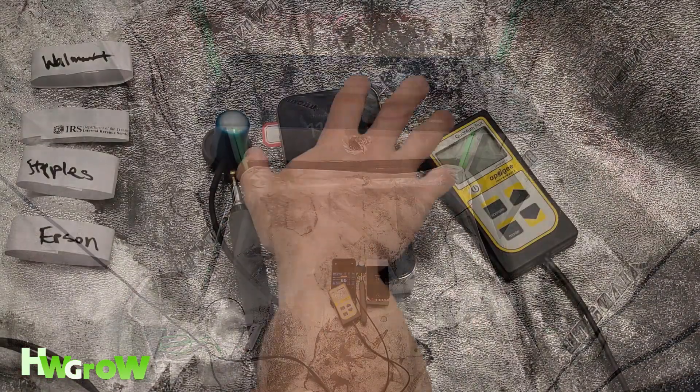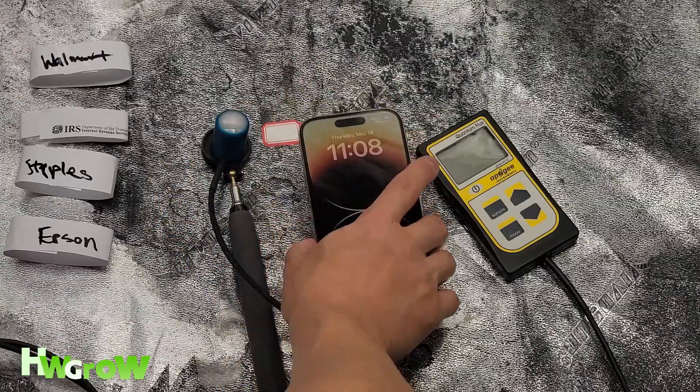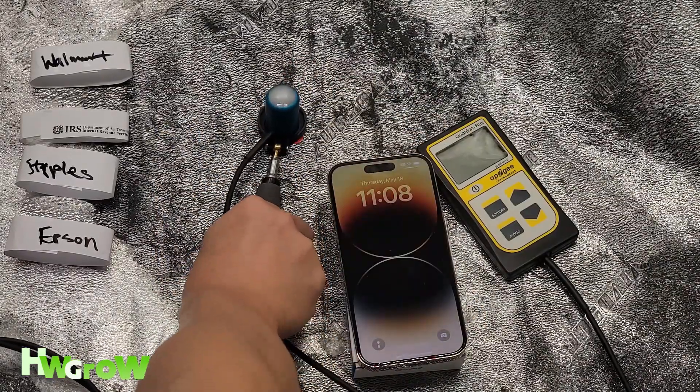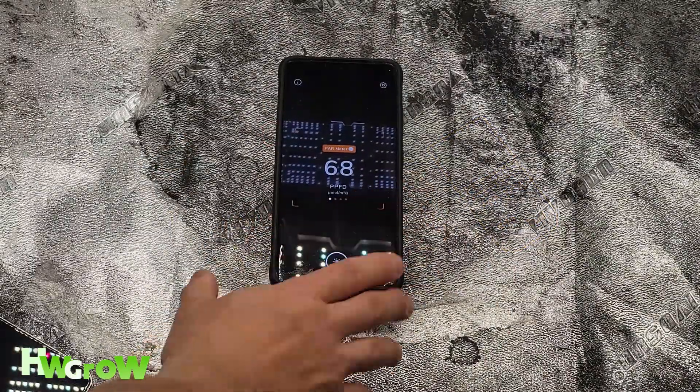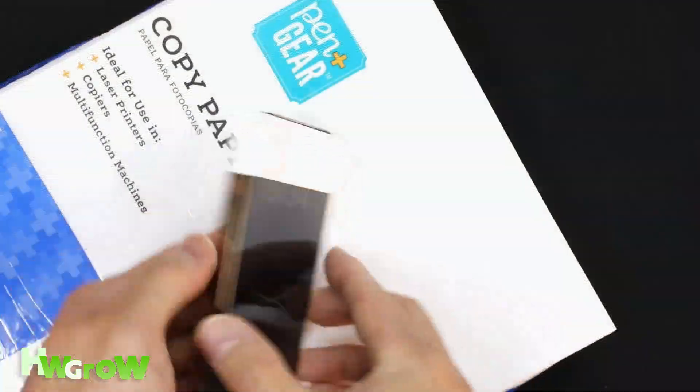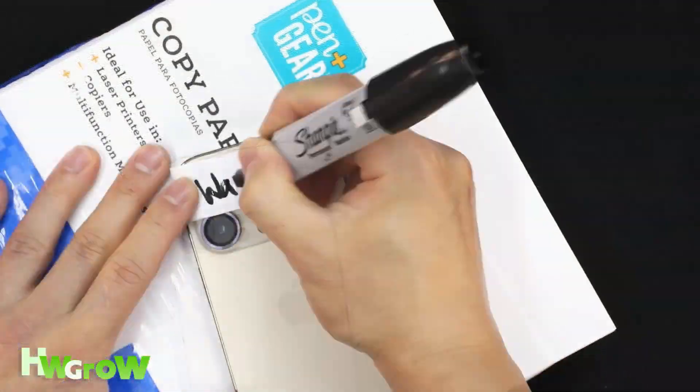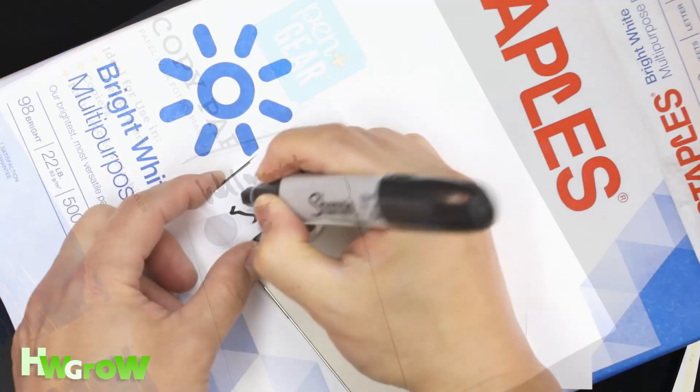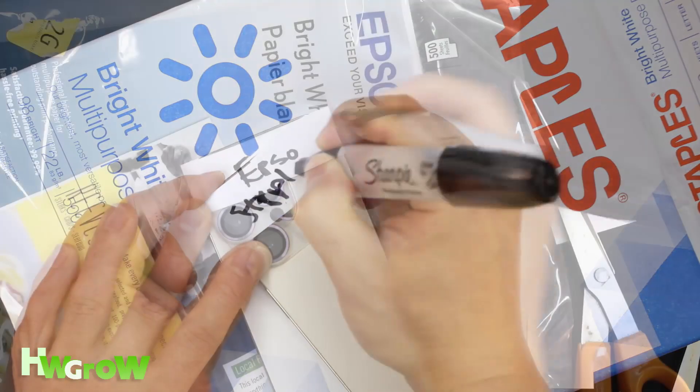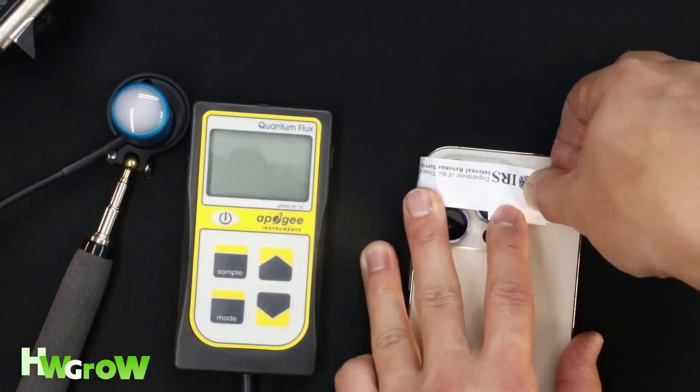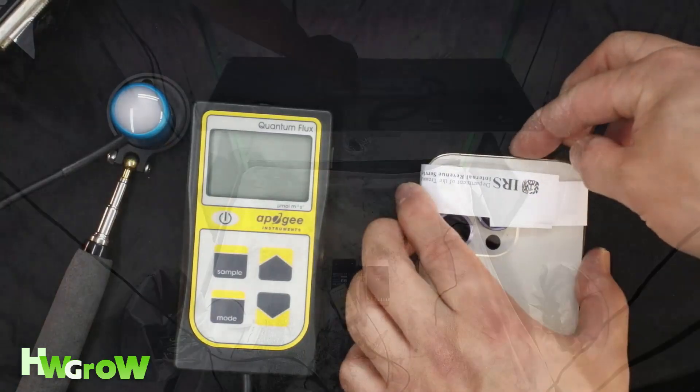On the floor, I have a spot marked for where I'll be measuring the light intensity using an Apogee MQ500, a Samsung S22 Ultra using Photone, an iPhone 14 Pro using Photone with Walmart paper, Staples paper, Epson paper, and for shits and giggles, IRS paper. Give it to the man.